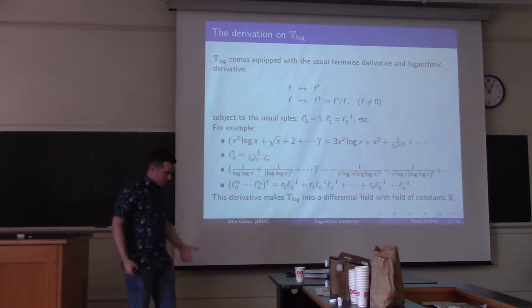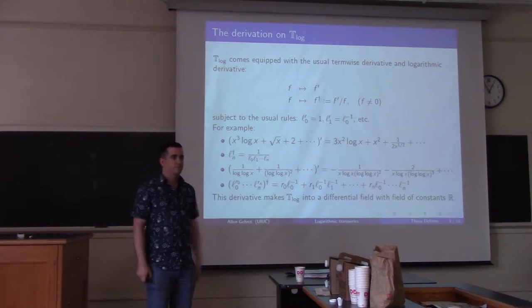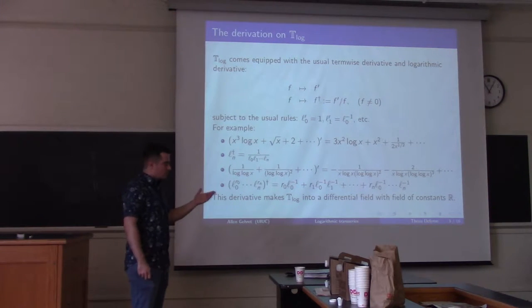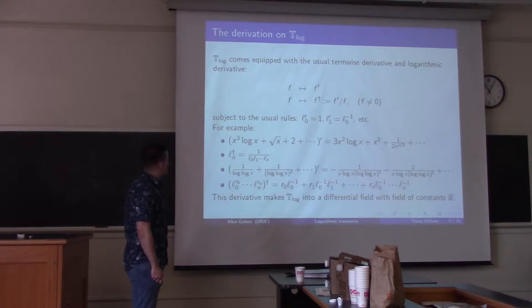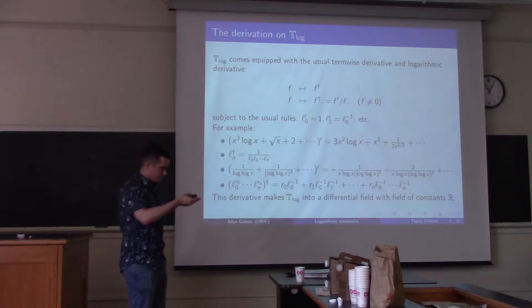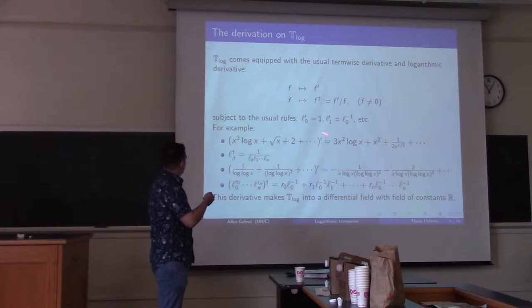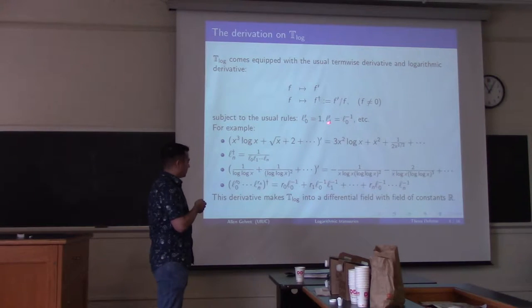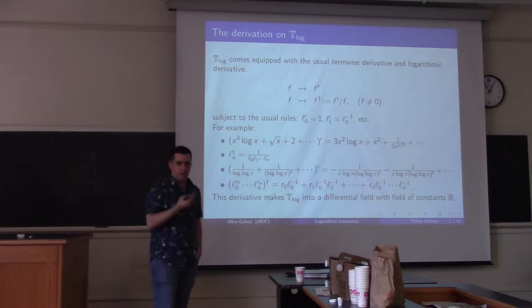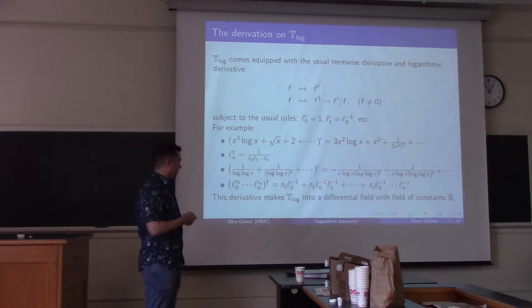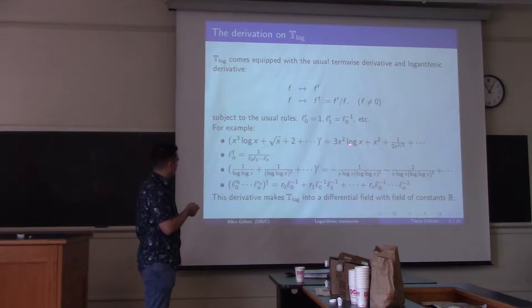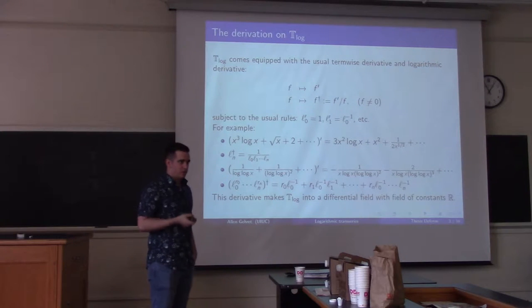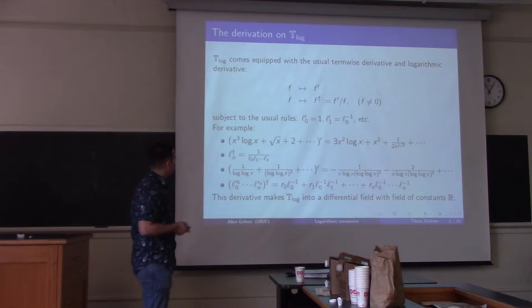The next thing we want to do is equip T-log with a derivative to make it a differential field — an ordered valued differential field. By derivative I mean an additive map that satisfies the product rule or Leibniz rule. We do this in a very natural way: we set x' = L_0' = 1, and log(x)' = 1/x, etc. It's the natural derivation you'd want to put on these things. For instance, (x³ log x + …)' = 3x² log x plus other terms.